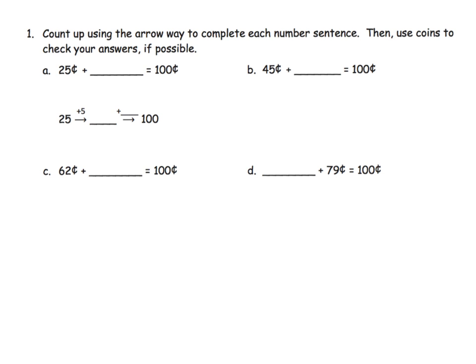Some students might instantly know that the answer is 75 cents. But other students might want to go incrementally: 25 plus 5 gives us 30, then 30 plus 70 gives us 100. Therefore, the total that we needed to add is 75 cents.